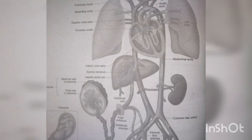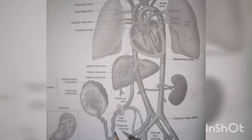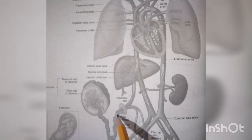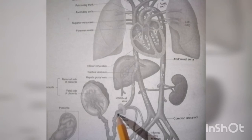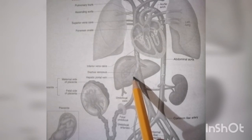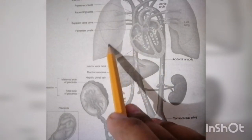How does fetal circulation change after birth? When the baby's umbilical cord is cut, blood flow from the placenta stops. The ductus arteriosus and ductus venosus will disappear. When the baby starts breathing, the fluid in the lungs is cleared and the air sacs open up.